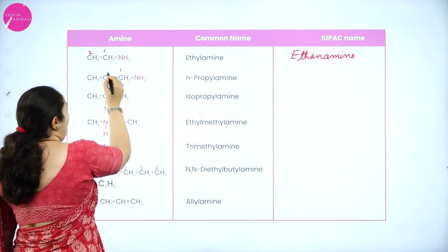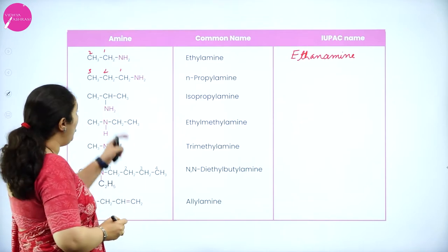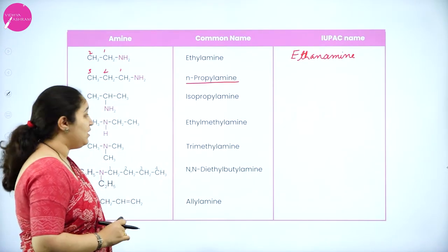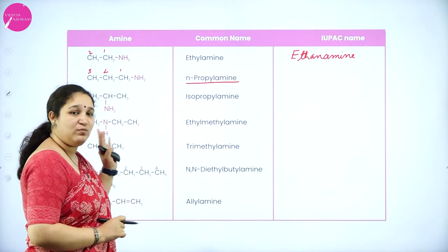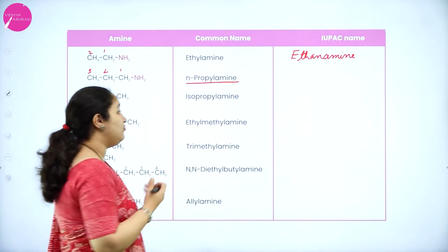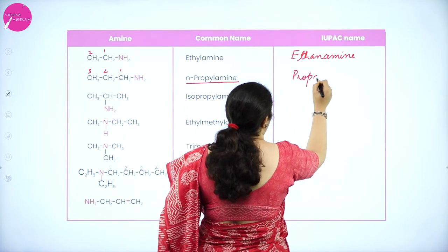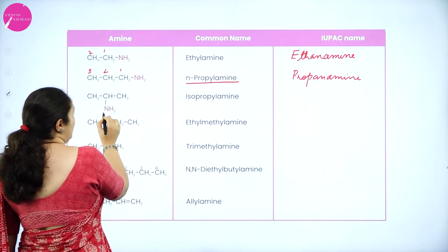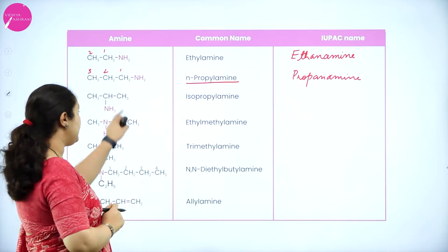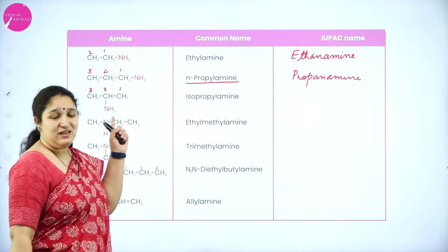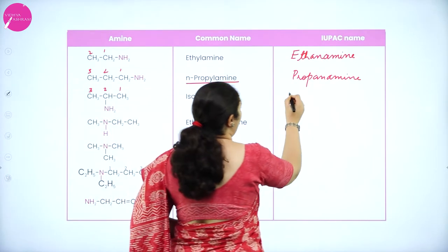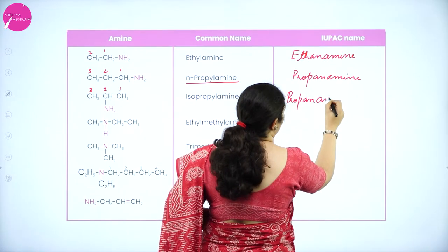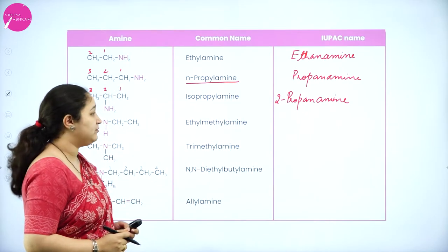Next, there are three carbon atoms and an NH2 group on the first carbon atom. The common name is n-propylamine — straight chain propylamine. The hydrocarbon with three carbons is propane, so the IUPAC name is propan-1-amine. In the next example, the NH2 is attached to the second carbon atom — it is still a primary amine. Numbering gives one, two, three, so the IUPAC name is propan-2-amine.